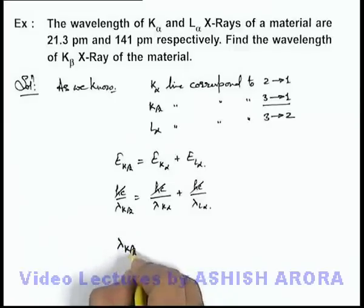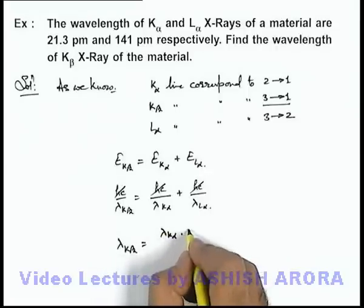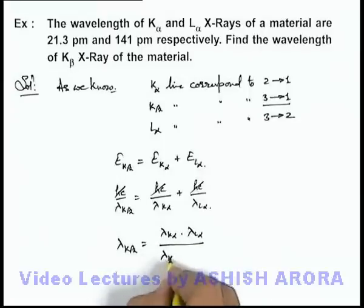And the value of lambda K-beta can be written as lambda K-alpha multiplied by lambda L-alpha, divided by lambda K-alpha plus lambda L-alpha.